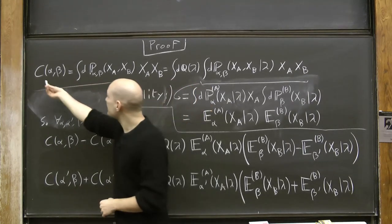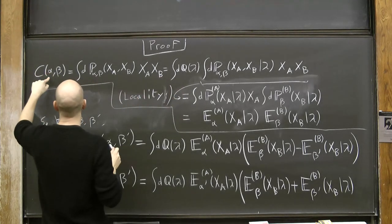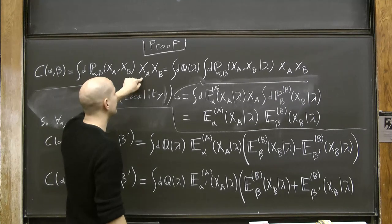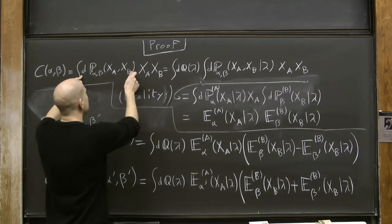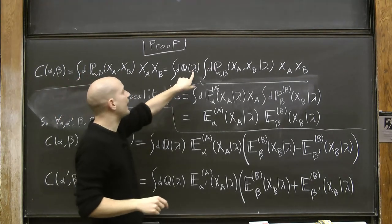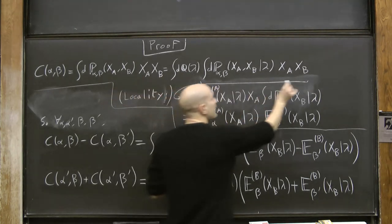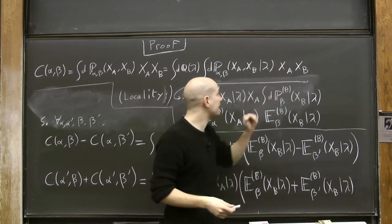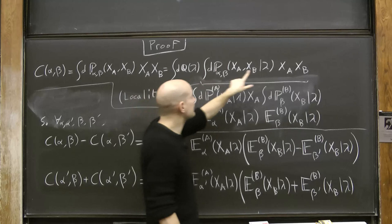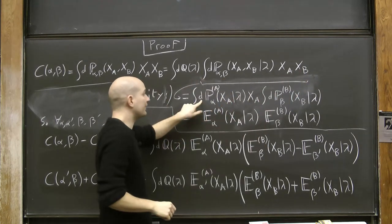Let's prove this. The first step is to write the correlation function—the expectation of X_A times X_B—using its definition as an integral over the joint probability distribution. The next step is to split this probability distribution over the conditional probability by first integrating over lambda, and then integrating over X_A and X_B conditioned on lambda. This gives an expectation of the product X_A · X_B in the conditioned probability distribution.